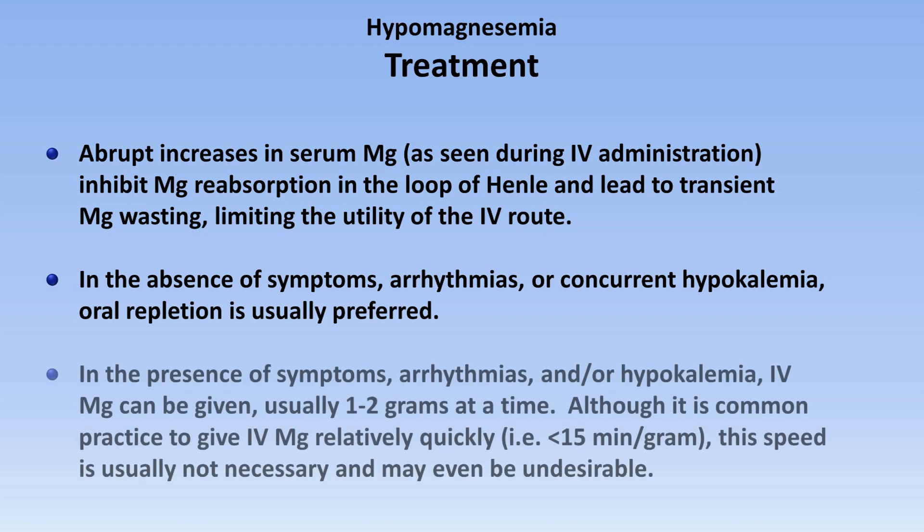On the other hand, if any of those are present, IV magnesium can be given, usually 1-2 grams of magnesium sulfate at a time. Although it's a common practice to give IV magnesium relatively quickly - that is, over less than 15 minutes per gram - this speed is usually not necessary and may even be undesirable.